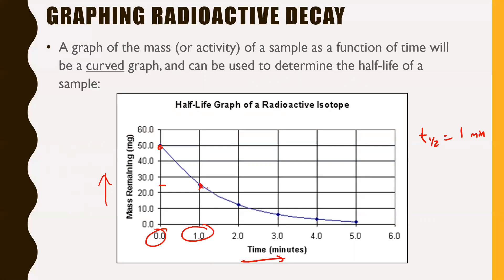So you can interpret it that way. Or you can start here. You can say, at one minute, we had 25. And then down here, we had 12.5 milligrams. That's half of 25. So that's half of what we had there. Look, it was another one minute that had passed. So it was another elapsed time of one minute. Hopefully that makes sense.